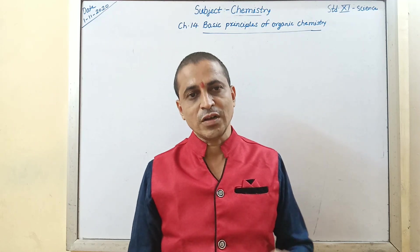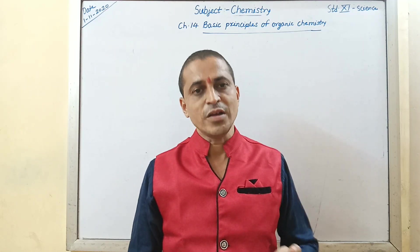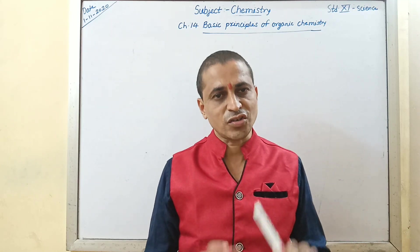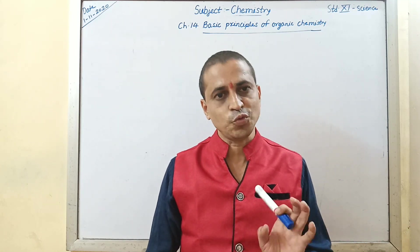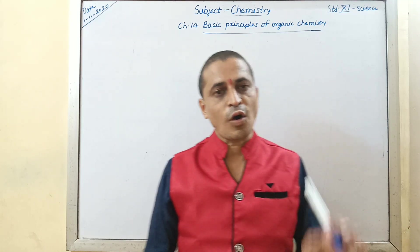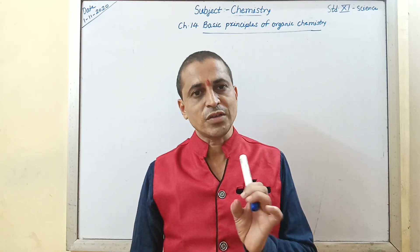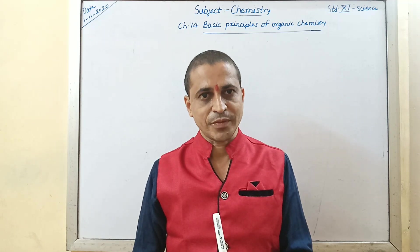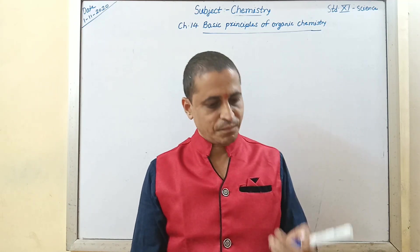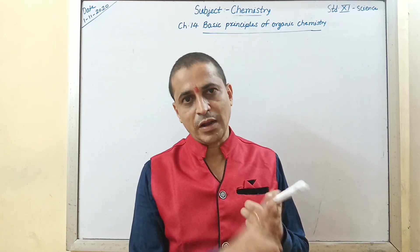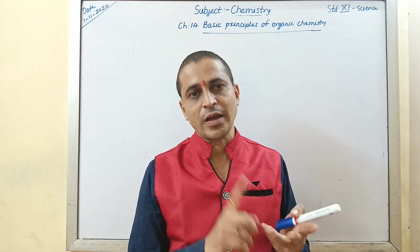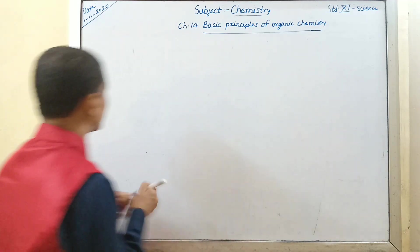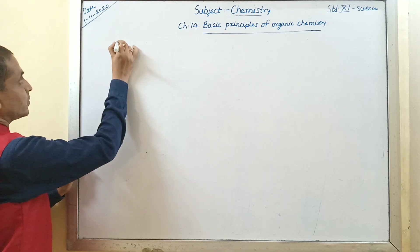Now today we are going to study representation of organic molecules in three dimensions. They are called as 3D structures, because you know that all the organic molecules have three dimensional shape. Three dimensional shape means they have length, breadth and height. Let us start: representation of organic molecules in three dimensions.